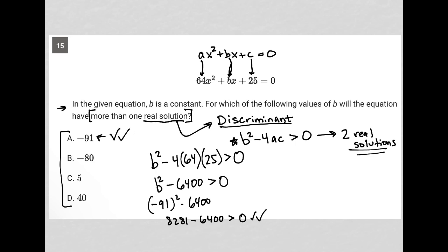Now, if it works, it should be the right answer, right? Because we shouldn't have multiple correct answers here. But I can try choice B and see what happens. If I had negative 80 squared minus 6,400, well, what's negative 80 squared? Well, that actually is 6,400, right? So that would be equal to zero. And zero, of course, is not greater than zero. So therefore, choice B is gone.